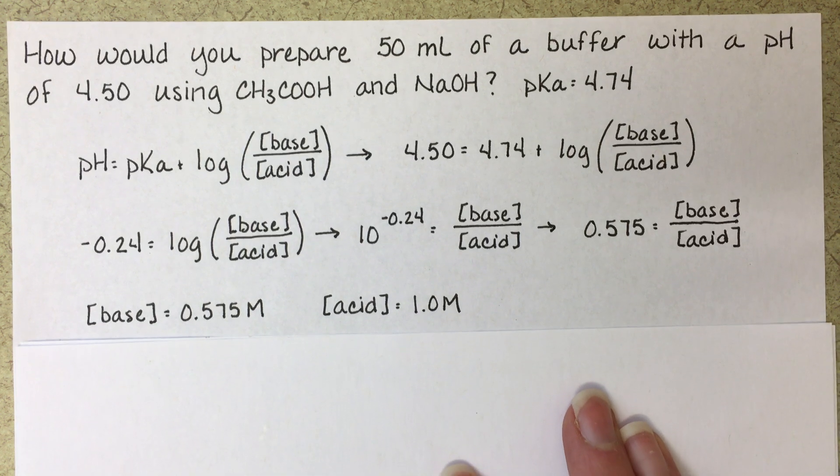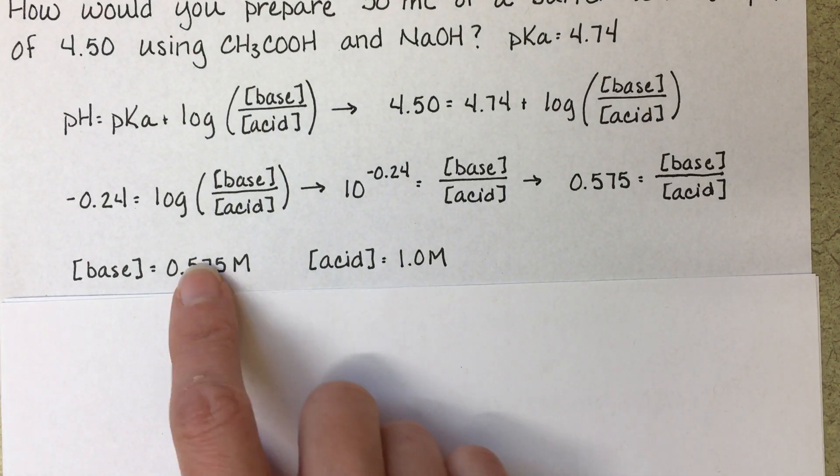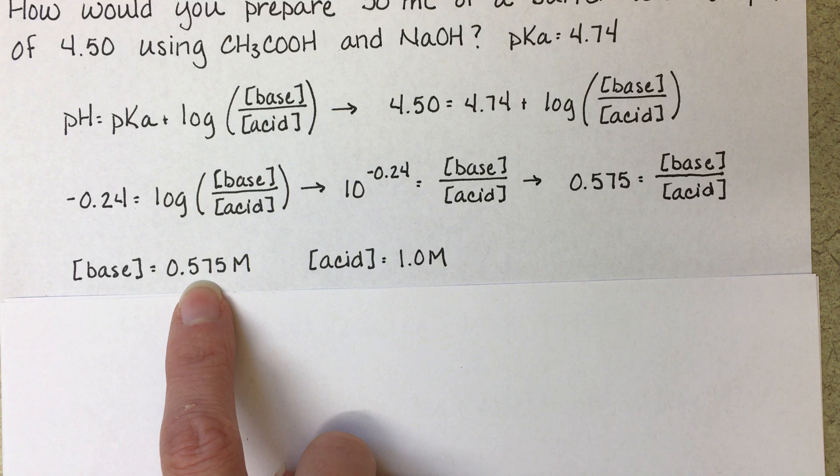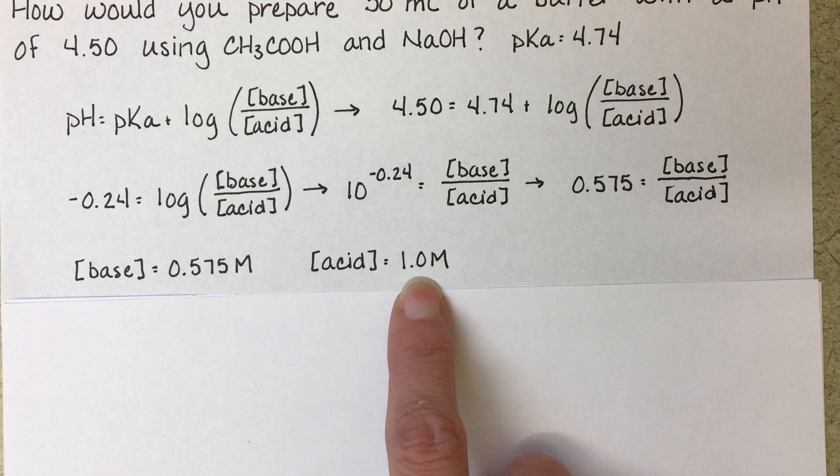In order to keep things simple, let's just say that our base will have a concentration of 0.575 and our acid will have a concentration of 1.